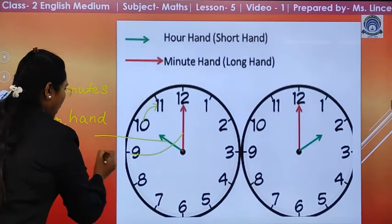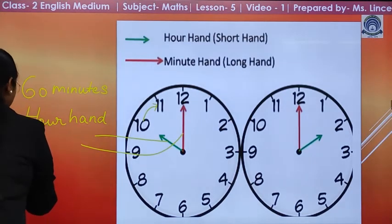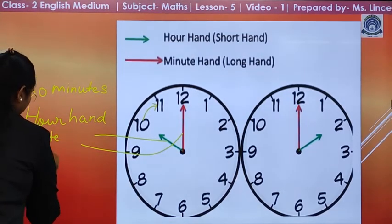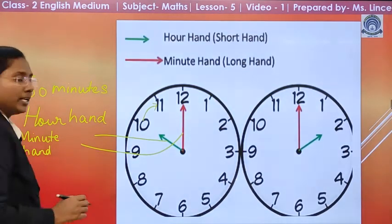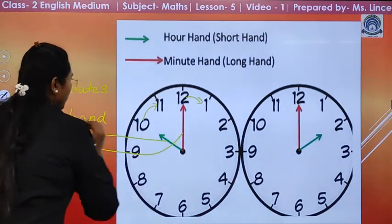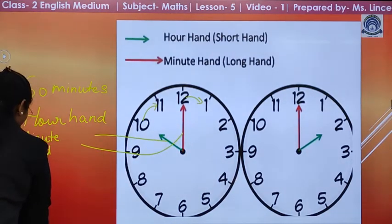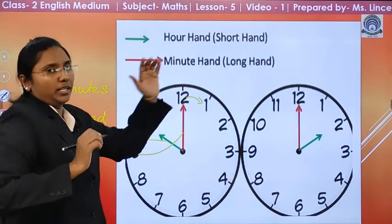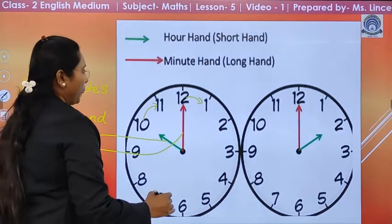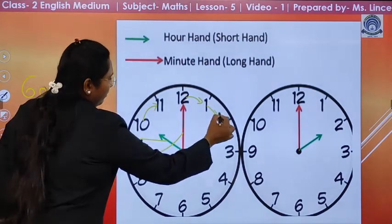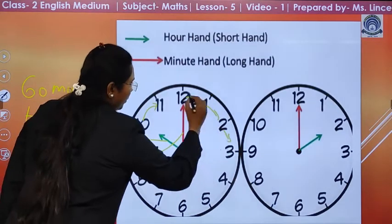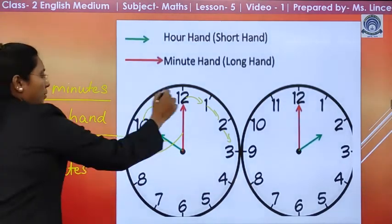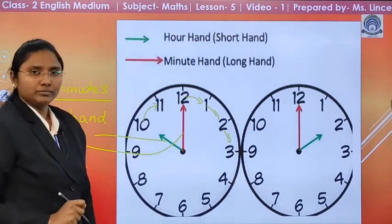Then, this is called minute hand. And, you know children, it takes 5 minutes to move from one number to another number. So, when we count 5, then again 5, in total, it takes 60 minutes to complete one round of a clock.